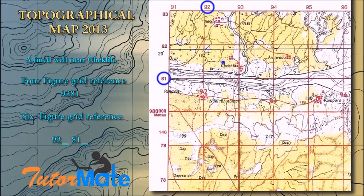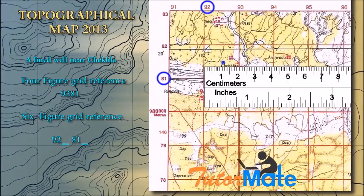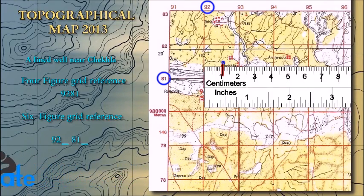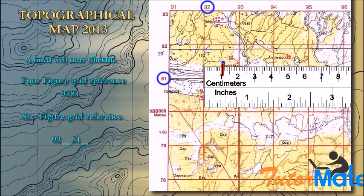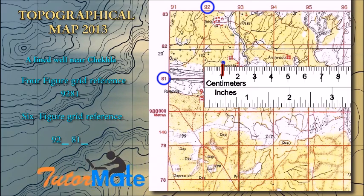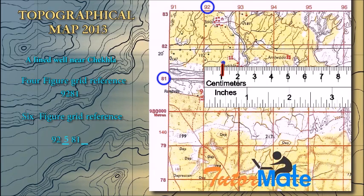Now we find the third and sixth figures. To measure the third figure, place your scale on Eastings 92 and measure up to the lined well. Your answer is 10 millimeters. This 10 millimeters is divided by 2 because the scale given on the map is 2 centimeters to 1 kilometer, so the third figure is 5.